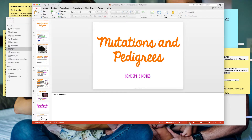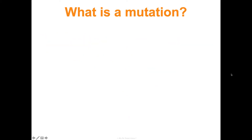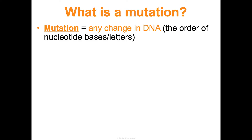Concept three: we're going to talk about mutations and pedigrees. So what is a mutation? We've mentioned it in unit 2 cells and unit 4 genetics. It is any change in your DNA — the order of your nucleotide bases, those letters: A's, T's, C's, and G's.